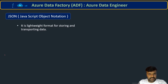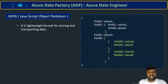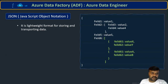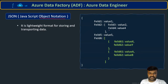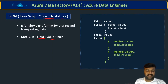Let us try to understand this with a simple example. If I take a general form of a JSON structure — first of all, its full form is JavaScript Object Notation, that is JSON. Data is always in the form of field and value pairs: there will be a field and its corresponding value.